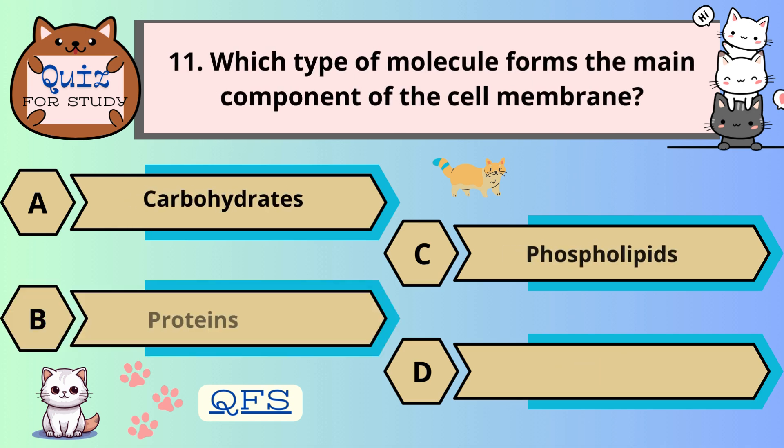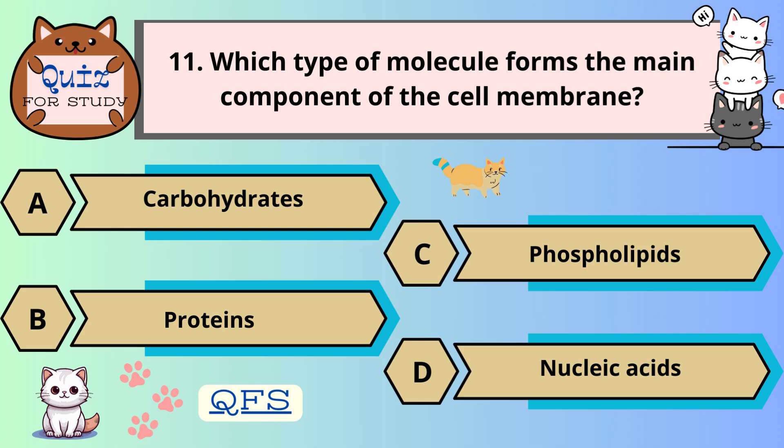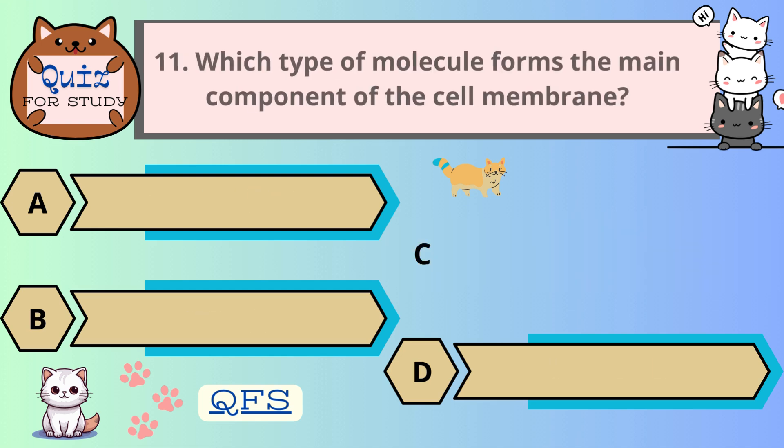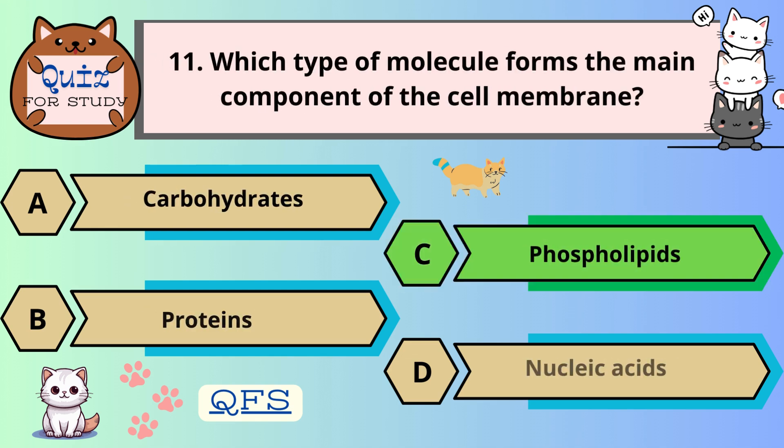Number 11. Which type of molecule forms the main component of the cell membrane? The correct answer is C. Phospholipids.